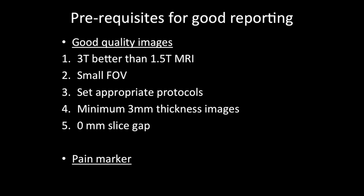For good reporting, you need good quality images, and if you have a good quality scan, more than half the job is done. 3T MRI is better than 1.5T, but good quality images can also be obtained on a 1.5T scanner. Always have a small FOV — if you are imaging the ankle, then just image the ankle and not the entire leg or the foot.